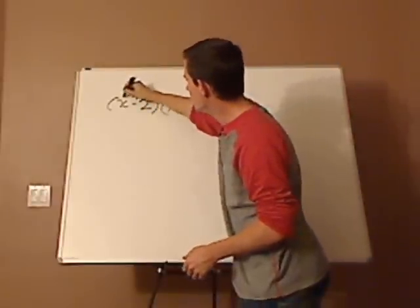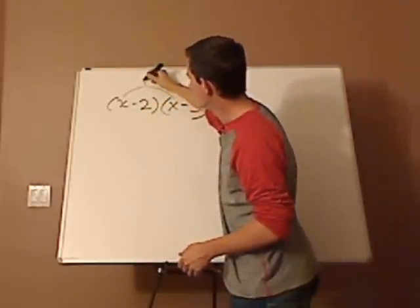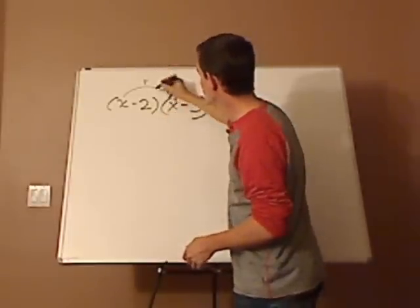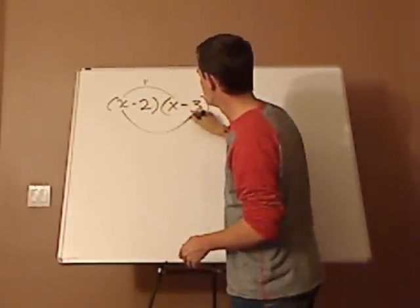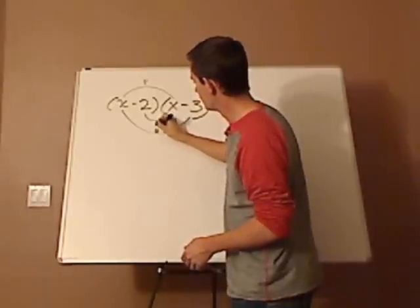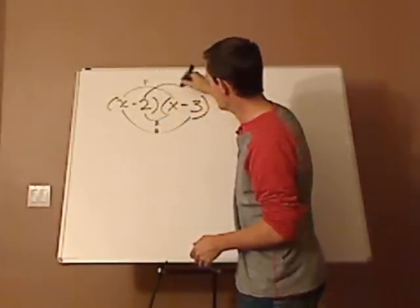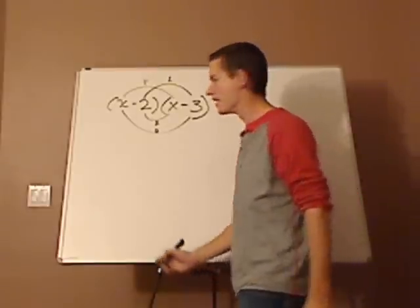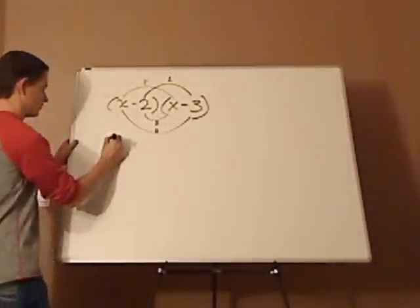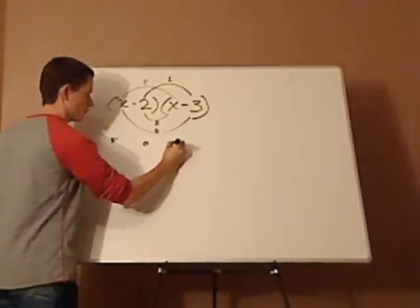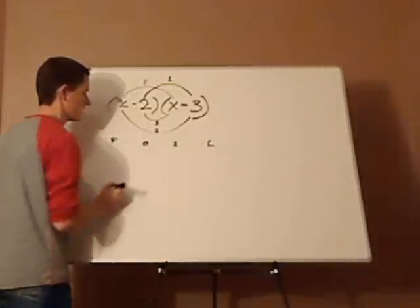Now, this, let's go over a foil. F stands for first. You have the outer and the inner, so that's those. And then this is the last. So you have your F, your O I, and then your last.